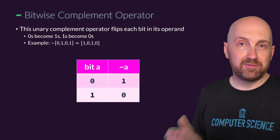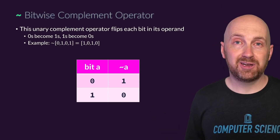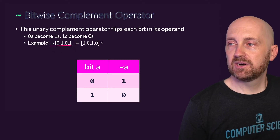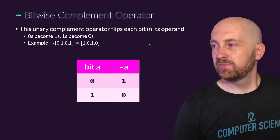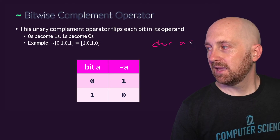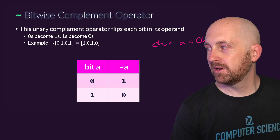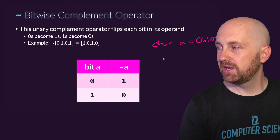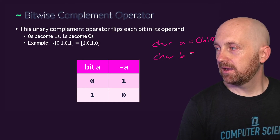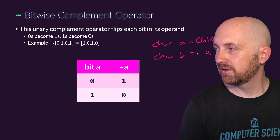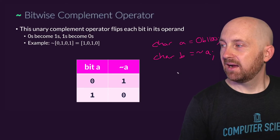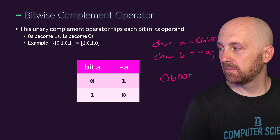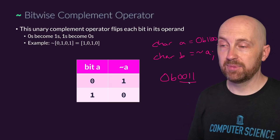The bitwise complement operator is very straightforward: it flips every bit — where there's a zero, make it a one; where there's a one, make it a zero. This is the tilde operator. So tilde applied to 0101 gives you 1010. For example, if we had a character A storing the bit pattern 1100, and we assigned character B as the complement of A (tilde A), then B's low-order bits would be 0011, because we flipped all those bits.